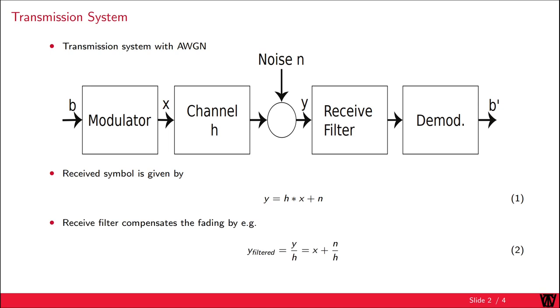As the channel is introducing some distortion to our transmission system, we have to compensate for that. Otherwise, we would not be able to demodulate our received signal properly.